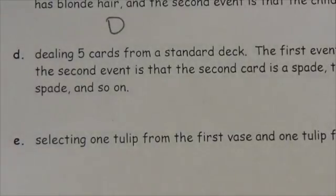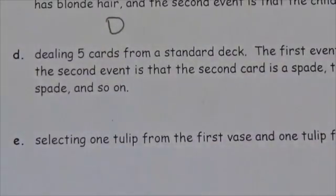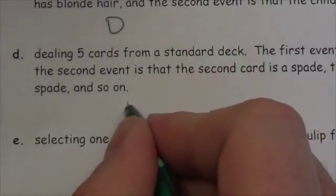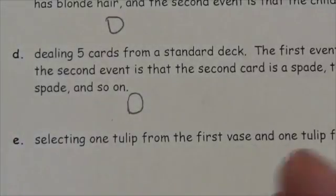Dealing five cards from a standard deck: the first event is that the first card dealt is a spade, the second event is that the second card is a spade, the third event is that the third card is a spade, and so on. If you're not putting those cards back in, the sample space gets smaller with each card dealt. These are dependent events because the probability of getting a spade goes down slightly with every spade that gets dealt. We assume success, so we assume every card dealt is a spade.